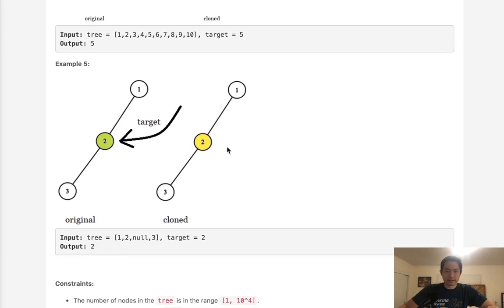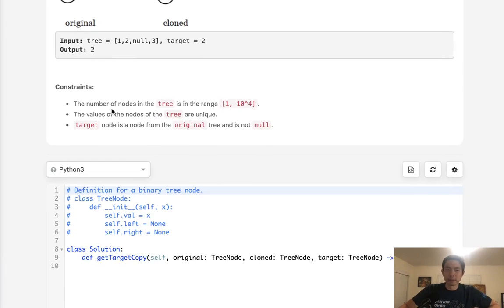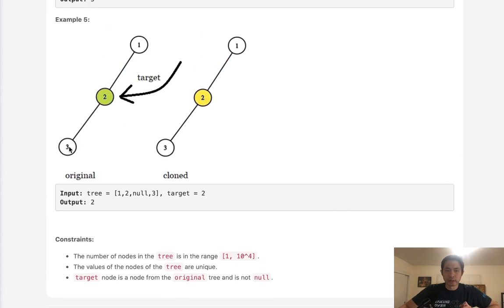They give you a bunch of examples here. I don't know why they give you so many. Here are some constraints: the number of nodes is whatever, and the value of the nodes of the tree are unique.